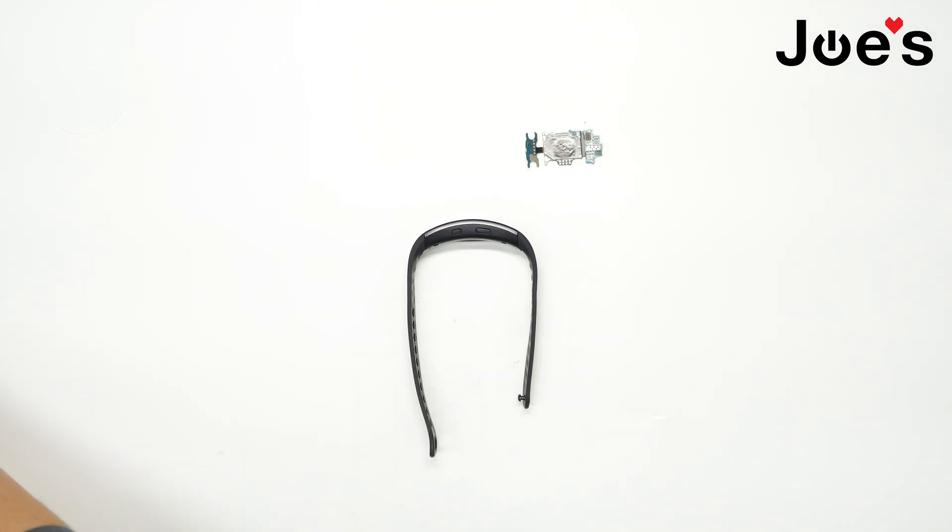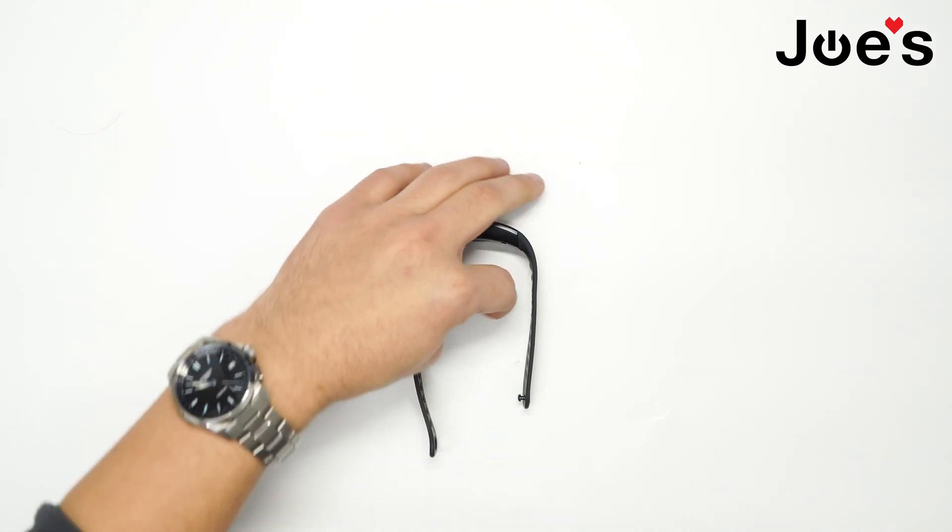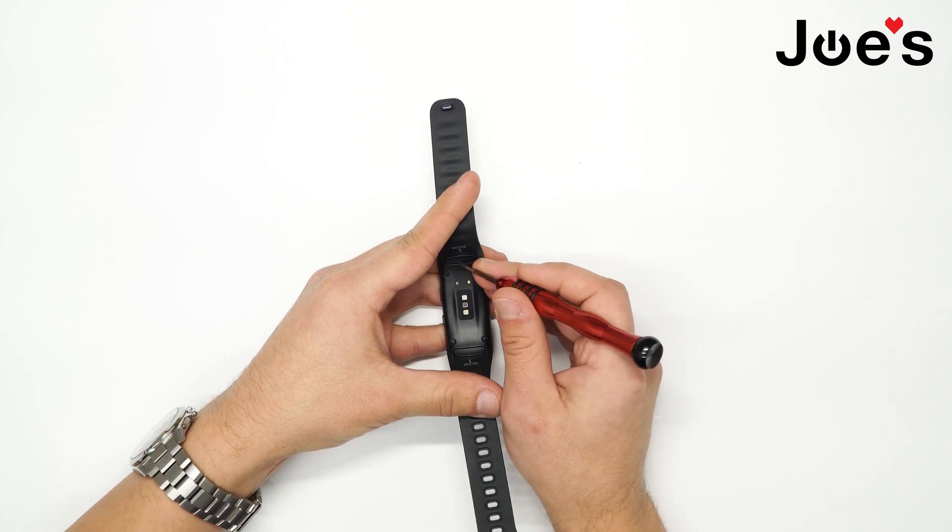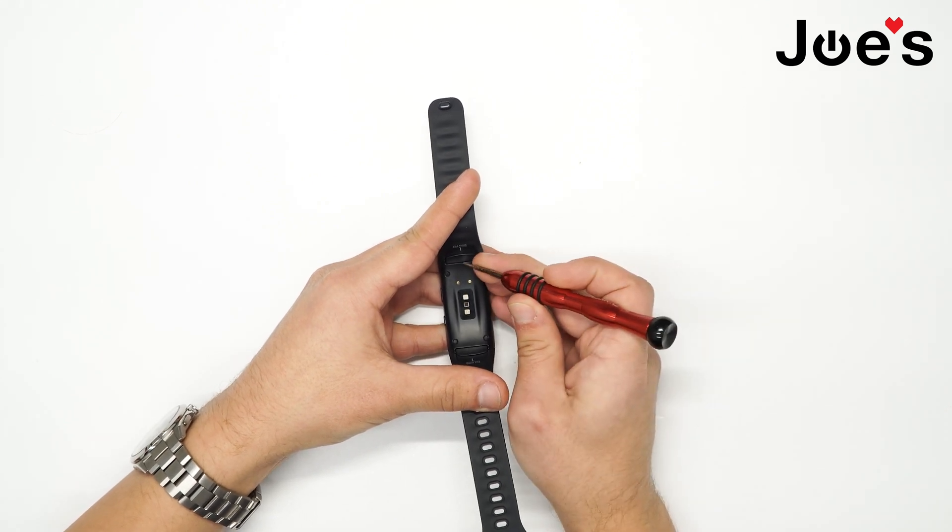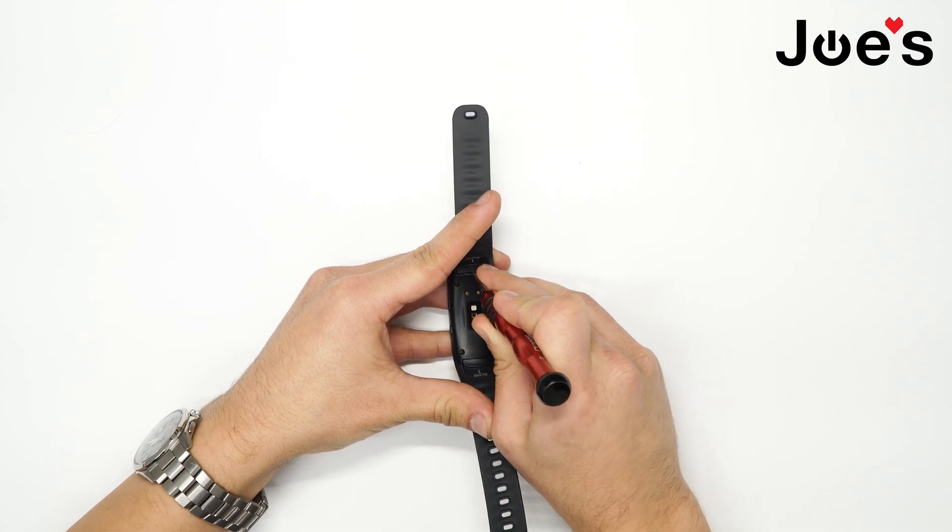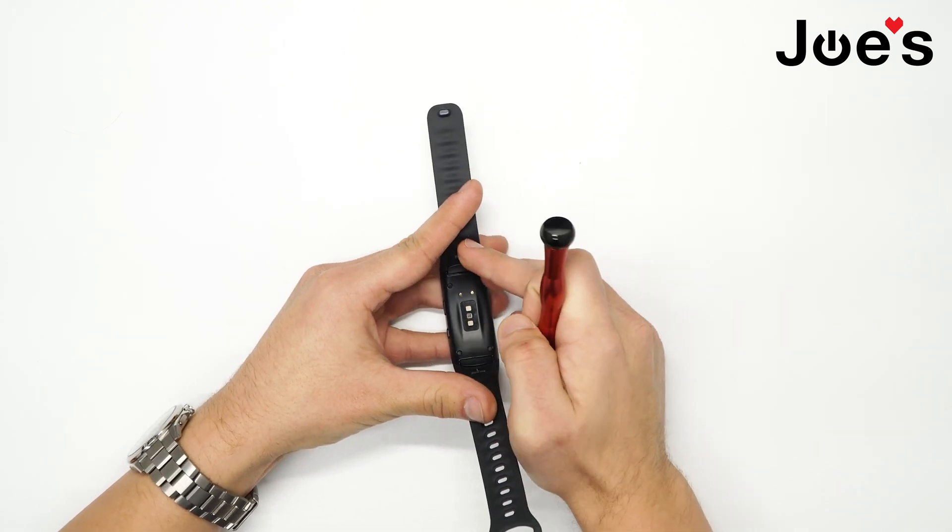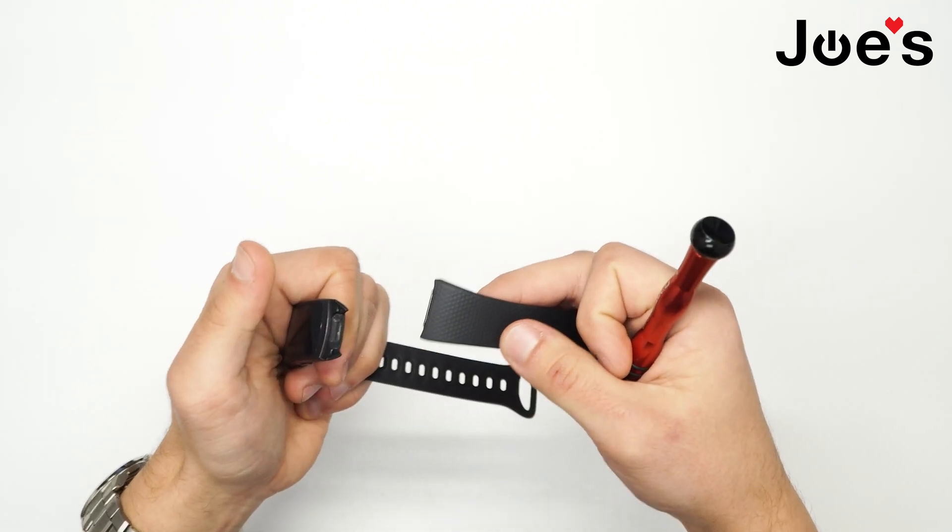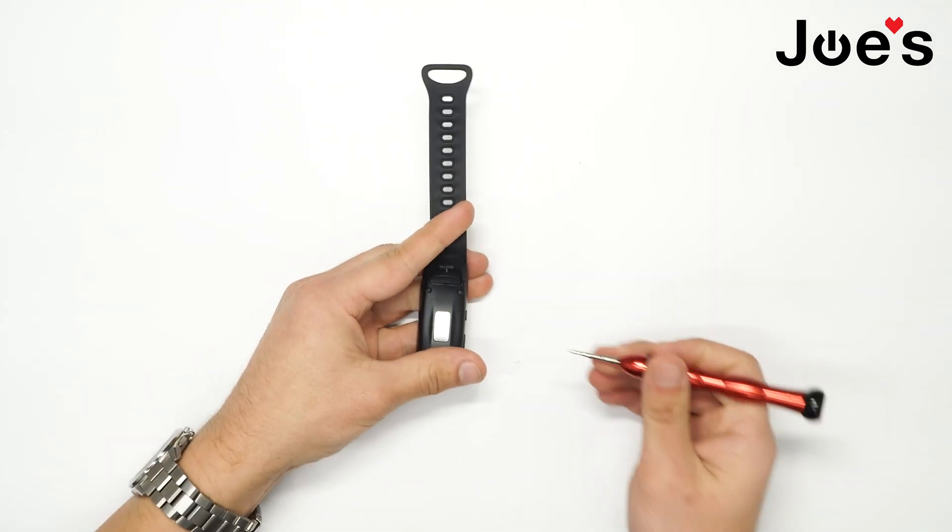To get started, we want to remove the bands. To remove the bands, go between the housing and the band itself and push in a little bit, maybe a little bit up, and it should click into place. Then you can just pop it right out. We'll do the same exact thing here on the other side.